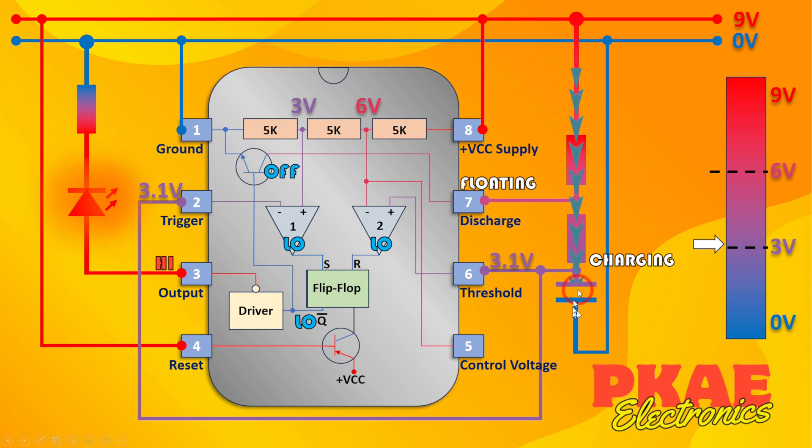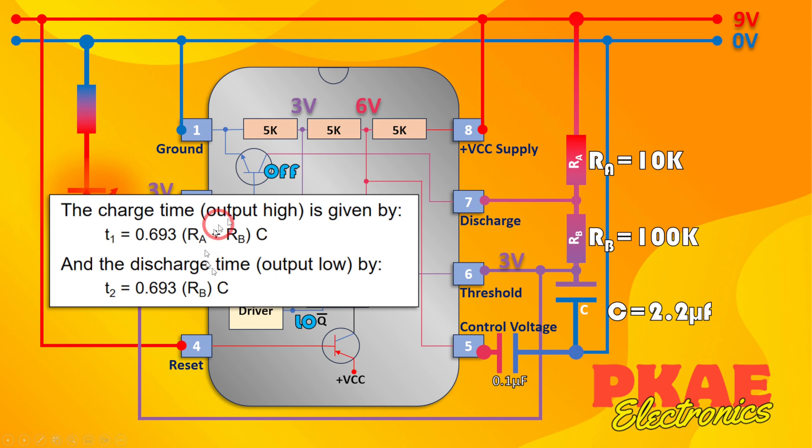Now the charge and discharge time of this capacitor is really driven by the values of these two resistors and of course the value of that capacitor as well. In my last video I showed you the standard calculations given in the data sheet. The on time, which is T1, is 0.693 times the value of RA, which is this resistor here, and I had that as a 10K resistor, plus RB, because you're charging through this resistor and this resistor to reach the capacitor, and I had that as 100K times C, which I had as a 2.2 microfarad capacitor.